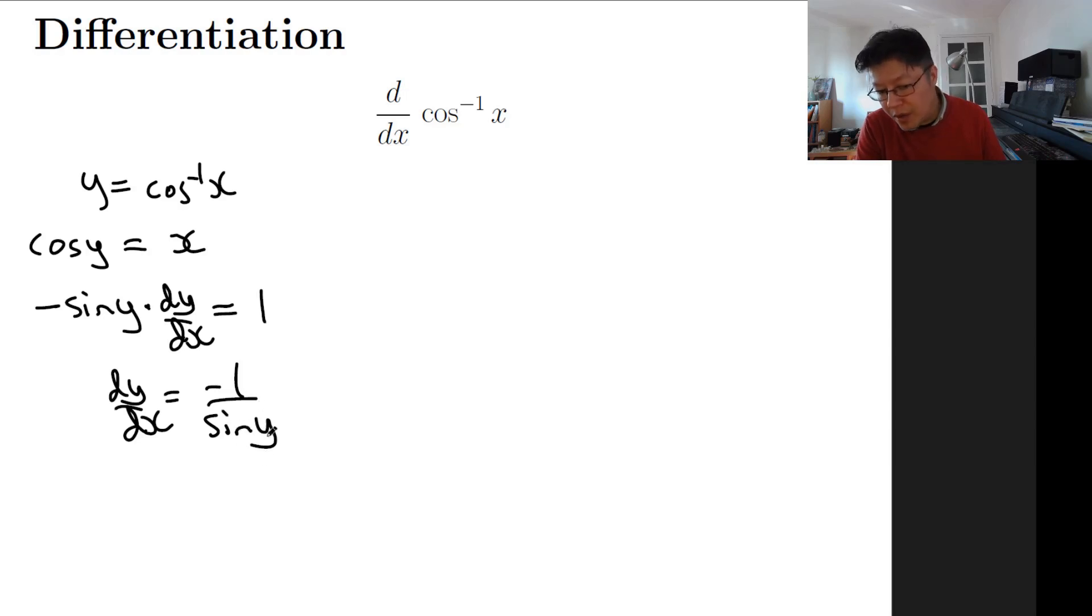Our answer is in terms of y, but we really want the answer to be in terms of x only. So we need to get rid of this y, and the general method is to use this equation here to somehow eliminate this sine y.